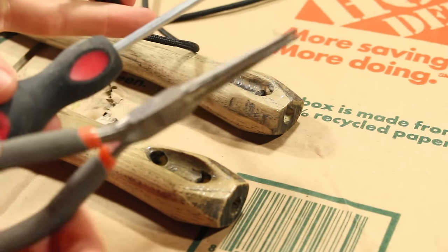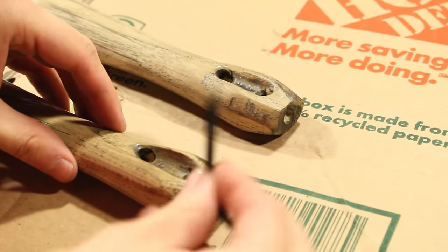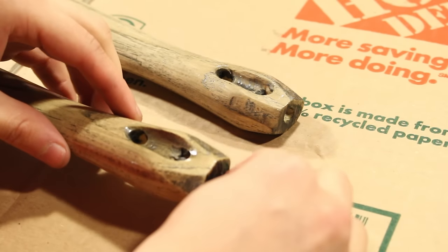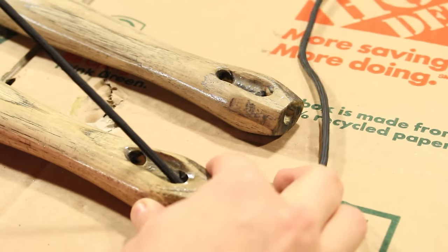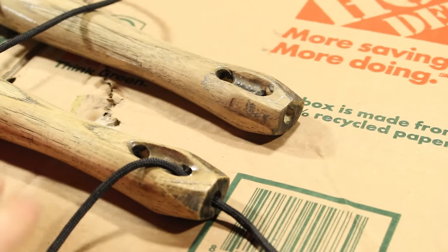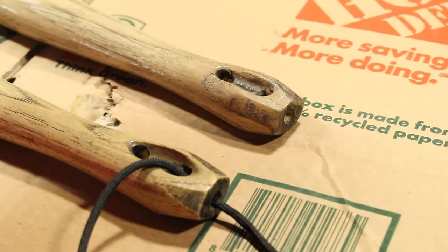So I've got a little screwdriver here and some pliers just to help with this. So first step, put the string into the top hole of one of the sticks. I pulled it about halfway through. This is four feet of paracord, by the way.